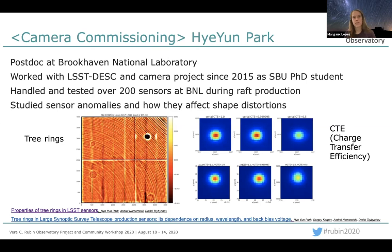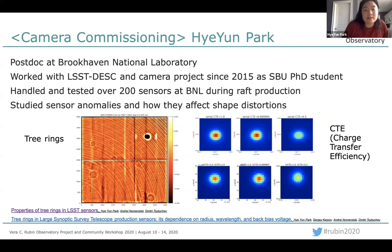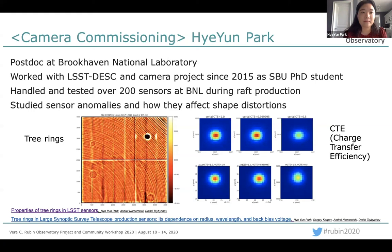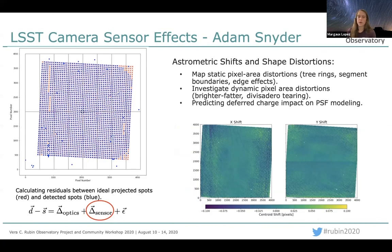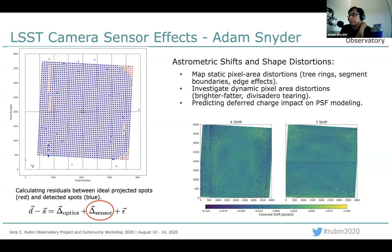Question from Jacques for Adam or He-Yoon about tree rings: what is the origin of tree rings and what is the magnitude of their impact? He-Yoon answers: tree rings are due to the silicon dopant concentration from the manufacturing process of the wafer. When growing the silicon wafer, the dopant concentration changes radially, making the tree ring-like pattern. It moves the charge carriers in certain directions, making brighter and darker patterns in radial directions. The magnitude: with back bias voltage at 50V for ITL and 70V for E2V, the average amplitude is less than 0.1% — around 0.04%. It gets slightly worse at the edges of the sensor but remains within 0.1%.